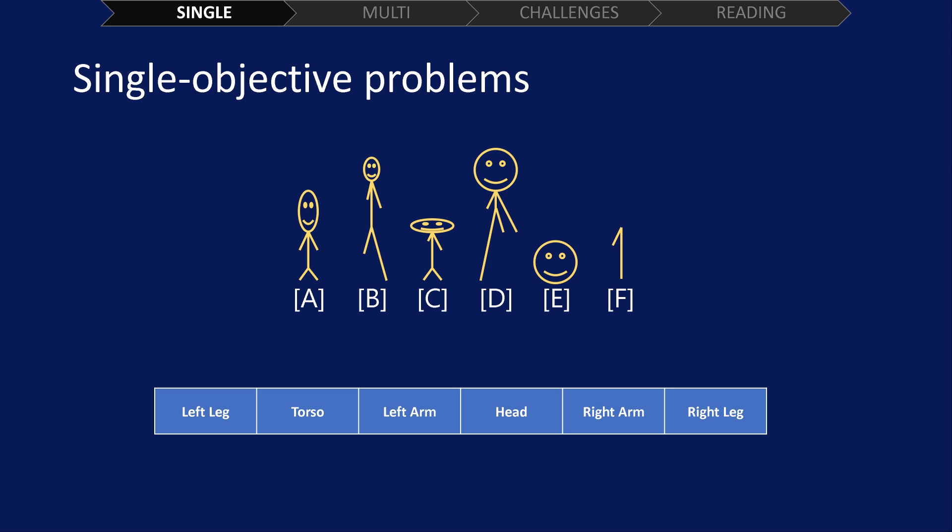Each solution to the problem was made up of variables, which we refer to as genes. Here is a look at what a solution might look like. You can see it's made up of variables defining the lengths of the stick figure's limbs and the size of its head.